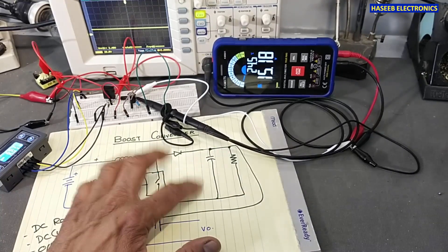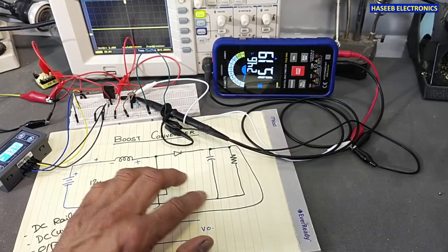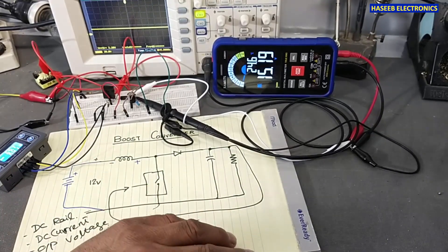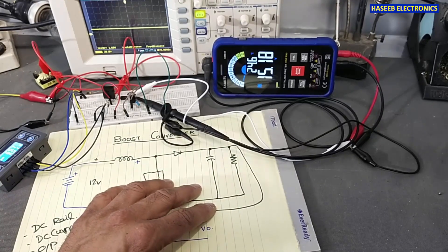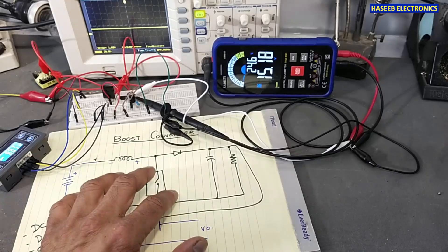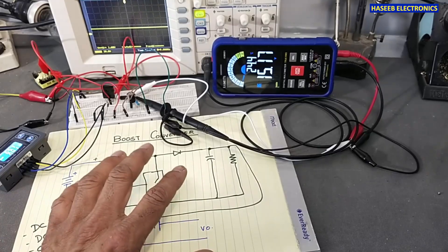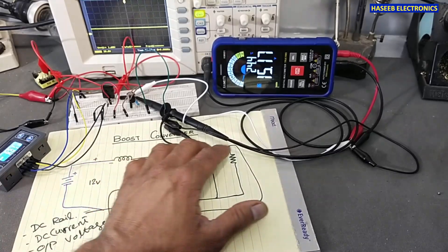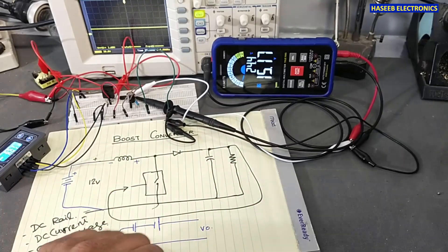And this boost converter, nowadays it is used in every system. If we say air conditioner outdoor unit boards, power supplies, it is called PFC circuit - power factor correction circuit.